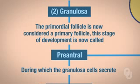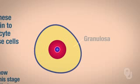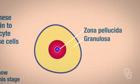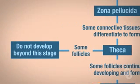Once we have those granulosa cells, they're going to secrete what's called the zona pellucida. Your granulosa cells will develop into the zona pellucida, which is then going to differentiate to form what are called the theca cells. Now some of these cells don't go beyond development any longer. Remember, this is happening at puberty, so we're talking about a primary oocyte per month going through this development.